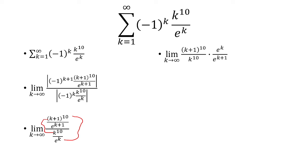From here, it's pretty obvious that e to the k over e to the k plus 1 is just 1 over e. And then the k plus 1 to the 10th over k to the 10th — I can factor out the exponent and have k plus 1 over k inside. The 1 over e I pulled out since it's a constant. Clearly, as k approaches infinity, that limit just goes to 1.